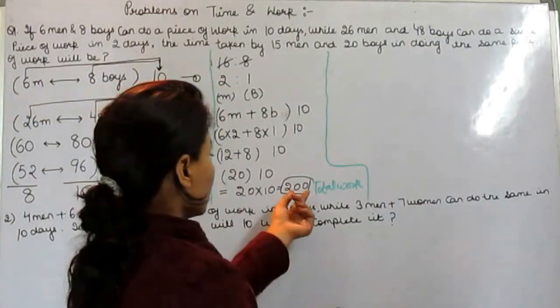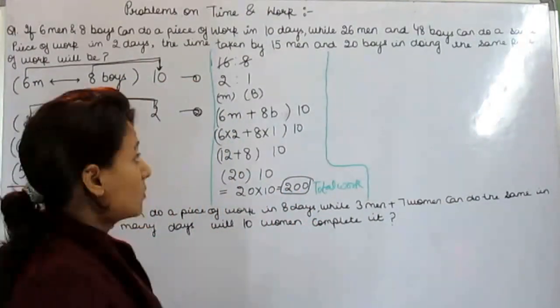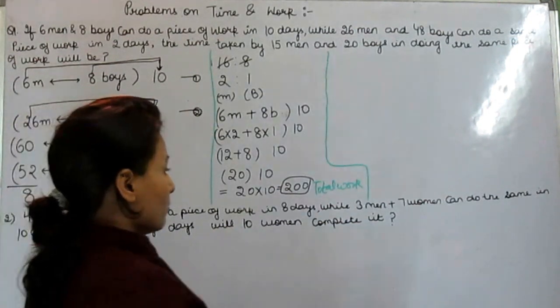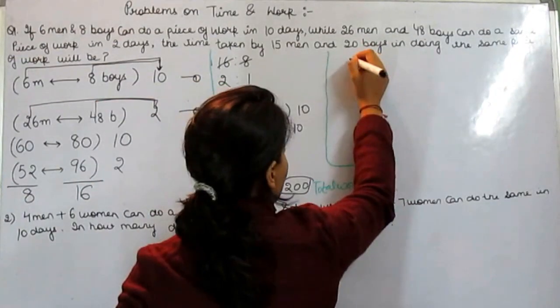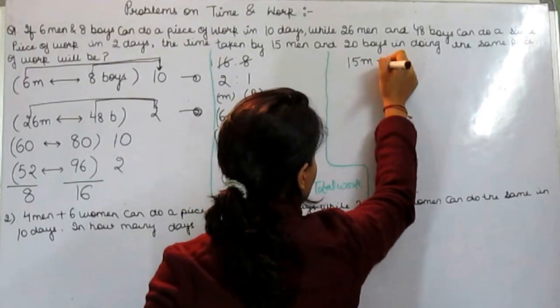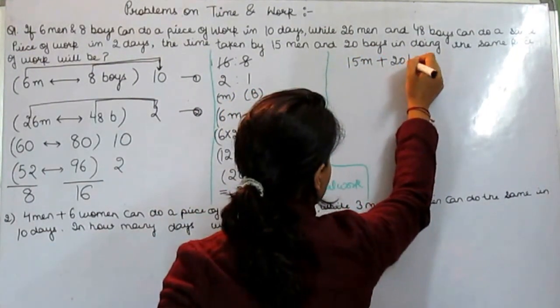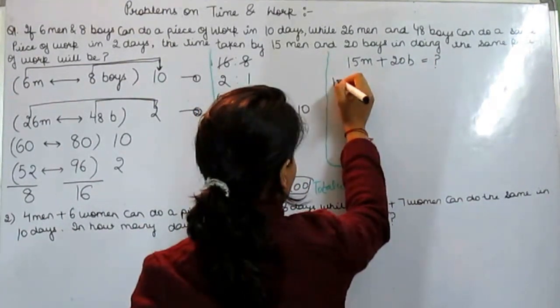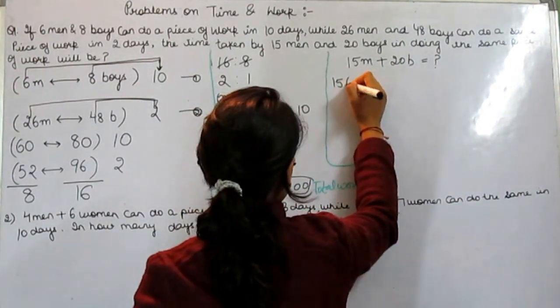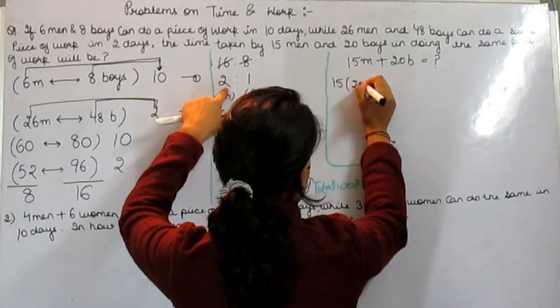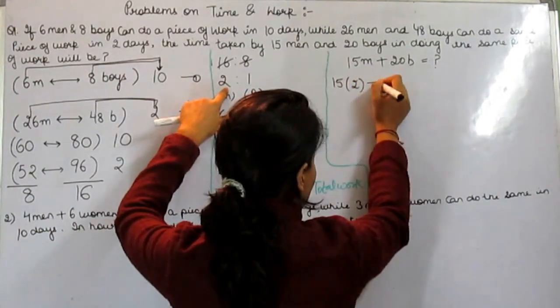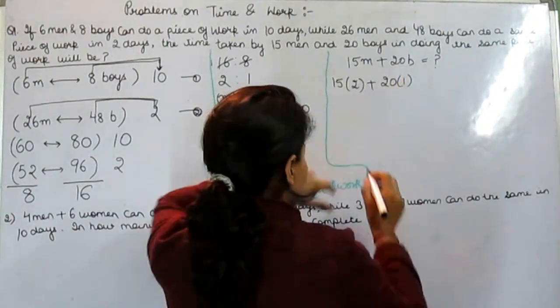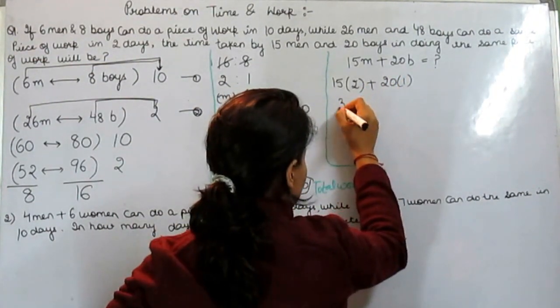Next step: this is total work, but what we have to find out. We have to get that time taken by 15 men and 20 boys. 15 into 2 because 2 is the ratio of men, plus 20 into 1 because 1 is the ratio of boys.